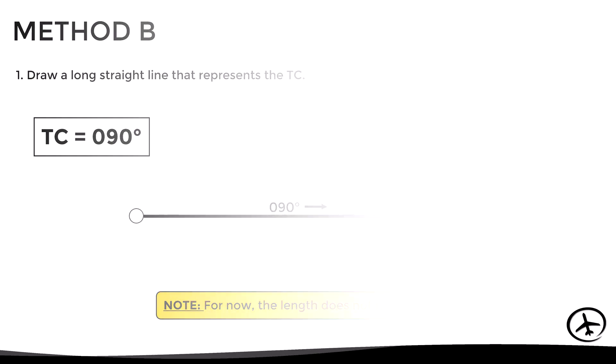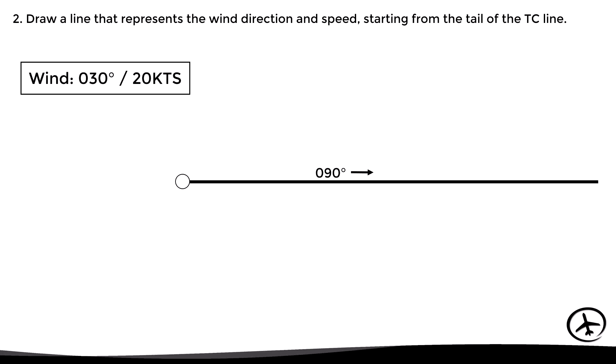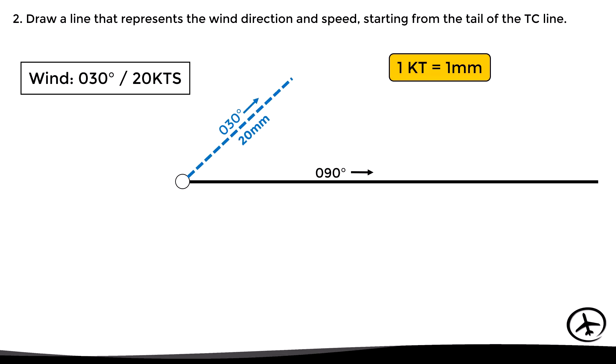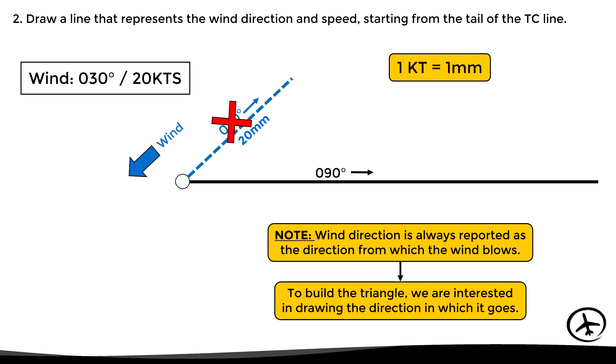The second step is to draw a line representing the wind direction and speed, but here — unlike Method A — we draw this line starting from the tail of the true course line. With a reported wind of 030 degrees at 20 knots, we cannot draw a line toward 030 because we are interested in representing the direction in which the wind is blowing, which would be 210. Using the same scale of 1 knot to 1 millimeter, the length of this segment should be 20 millimeters.